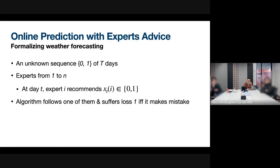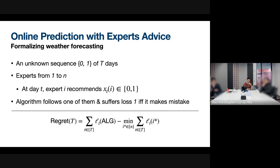Let me formalize the notion of online prediction. I'll define two versions. In the simple version, there's an unknown sequence of binary numbers over T days, and N experts — scientists, statistical models, and so on. Each day the experts give a binary recommendation. After observing all recommendations but before observing the actual outcome, the algorithm must follow one of the experts and make a decision. It then suffers a loss of one if and only if it makes a mistake. The classic performance metric is regret: the total mistakes the algorithm made relative to the best expert.